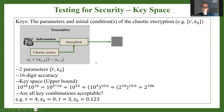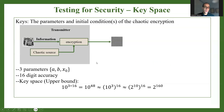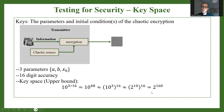Let me give another example. Say we have three parameters — one initial condition and two parameters for the map. If I perform the same calculation for 16-digit accuracy, the keyspace size becomes 2 to the power of 160, which is much, much larger than before.